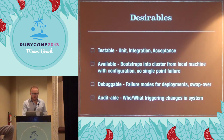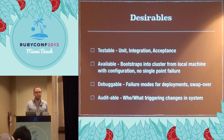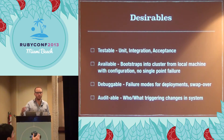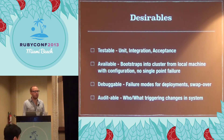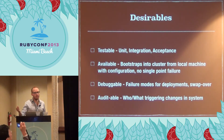Debuggability is big. When a deployment fails, we need to get on the machine, see why it failed, see what's going on. The whole system is based on the concept of swapping out an already running cluster with a newly deployed cluster. We want to keep that old cluster around in case the new one has problems, so we can just swap back.